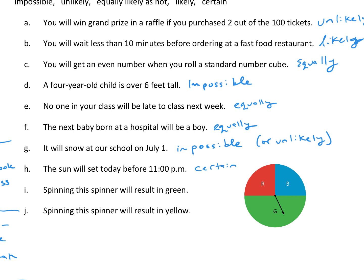I think the sun is setting, like, around 5 or 6 right now. I, spinning the spinner results in green. So, we can see green takes up half of the spinner, so this is going to be equally. And then, spinning the spinner results in yellow, and that is impossible. Right? There's no yellow on the spinner.